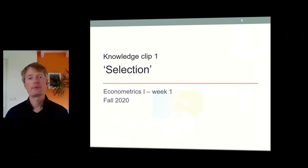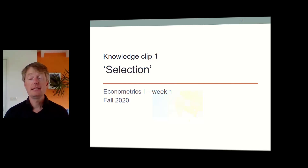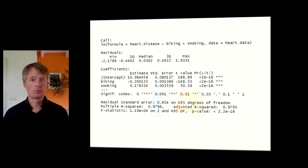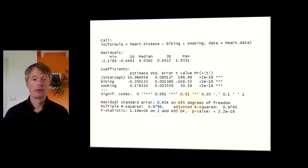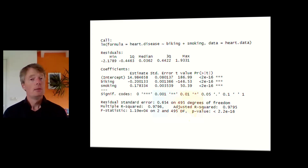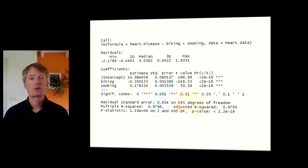The topic of the first knowledge quiz this week is selection, and as you will see, selection is absolutely key when estimating the effect of a treatment on an outcome. Say that you look at some regression samples — you type in your code in R and you get back some estimated coefficients. It is highly problematic to do this without further thought, because we tend to interpret the estimated coefficients causally.